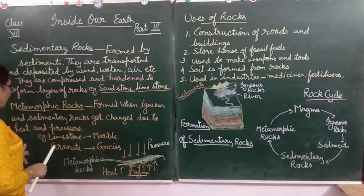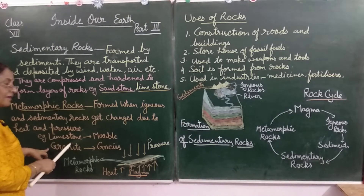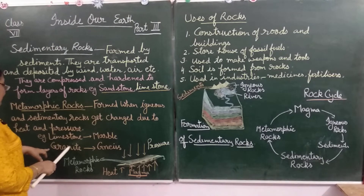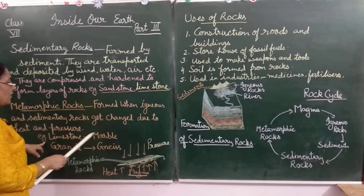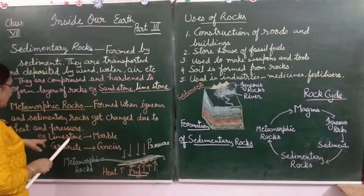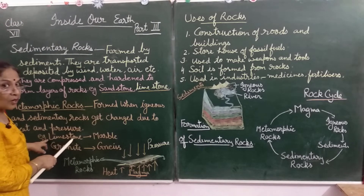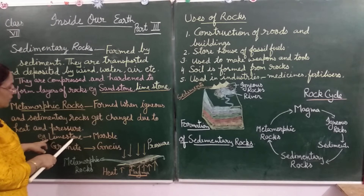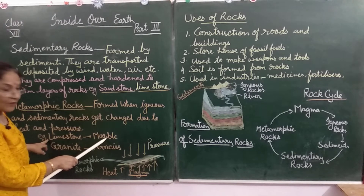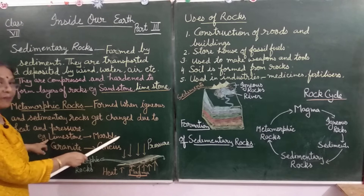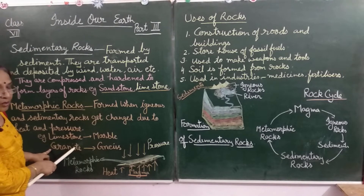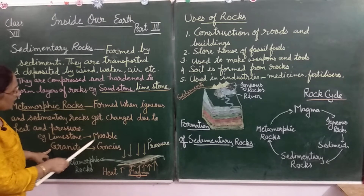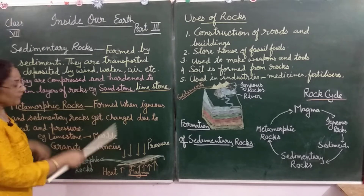For example, granite — which is an igneous rock — is converted into gneiss, and limestone — which is a sedimentary rock — is converted into marble. Marble is a metamorphic rock and gneiss is also a metamorphic rock.